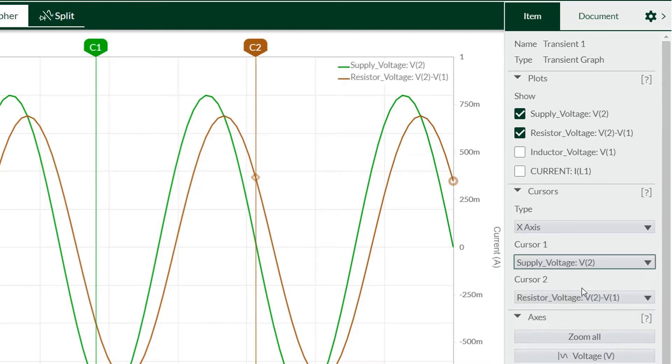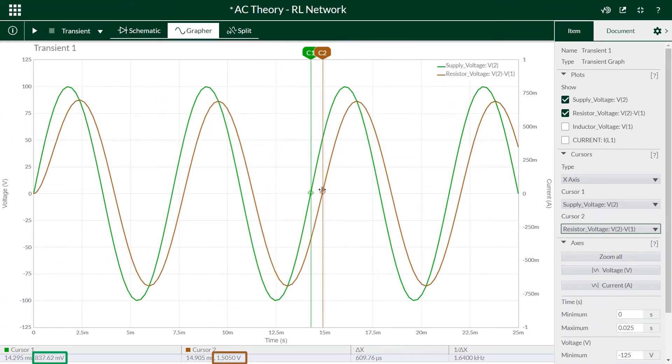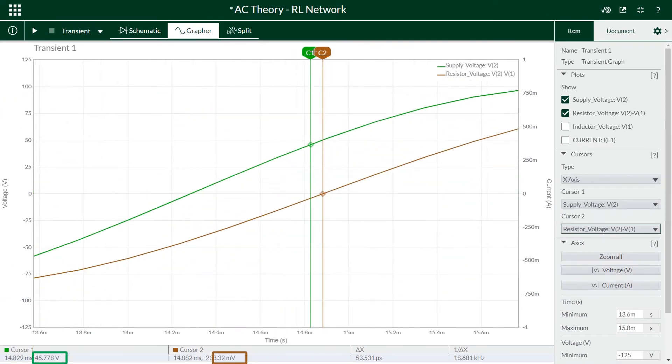So click supply voltage, make sure we have the right ones, resistor voltage. Now we can zoom in with the mouse wheel and try to get the highlighted voltages as close to zero as we can, so we are measuring the same point on their waveforms.